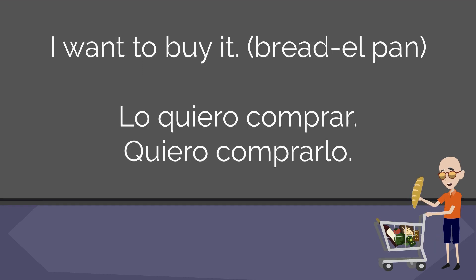If you want to translate the English word 'it' into Spanish, we're going to use the direct object pronoun, but it still needs to agree in number and gender with the object it's replacing. So if I want to say 'I want to buy it' and I'm talking about bread — 'el pan,' a masculine noun — I have two options: 'Lo quiero comprar' or 'Quiero comprarlo.' The direct object pronoun is masculine singular, just like bread is.